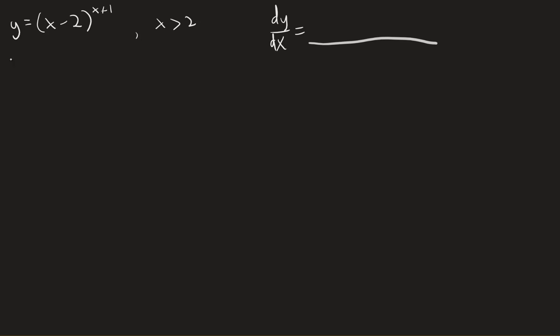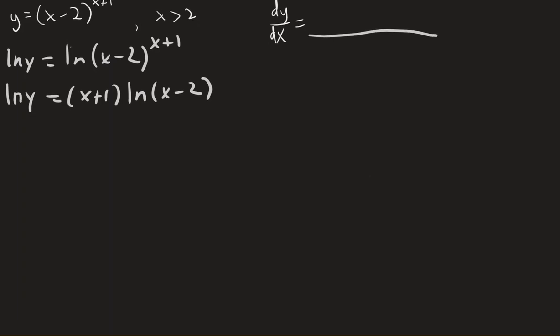So one way to deal with that, if I was to take the natural log of both sides, then now this x plus 1 is an exponent on something that I'm taking the log of. So by power of exponents, I can bring this down out front. Okay, so there's some of my algebra work.